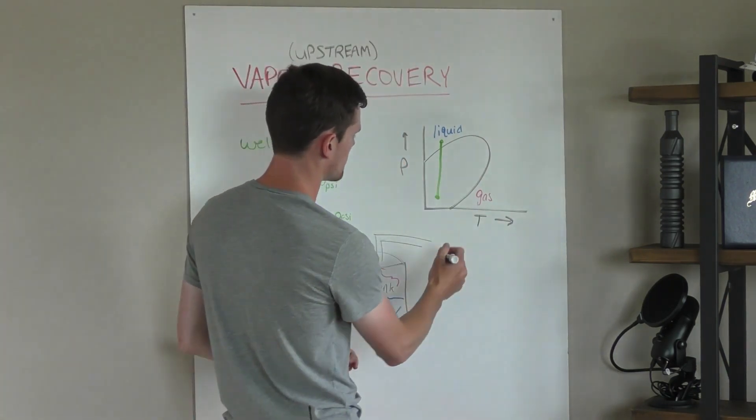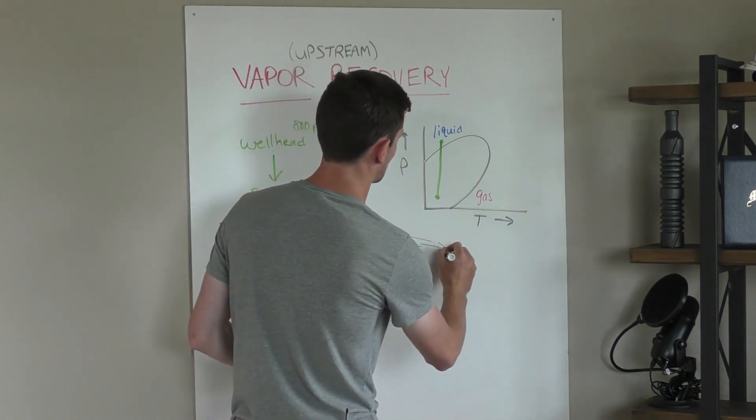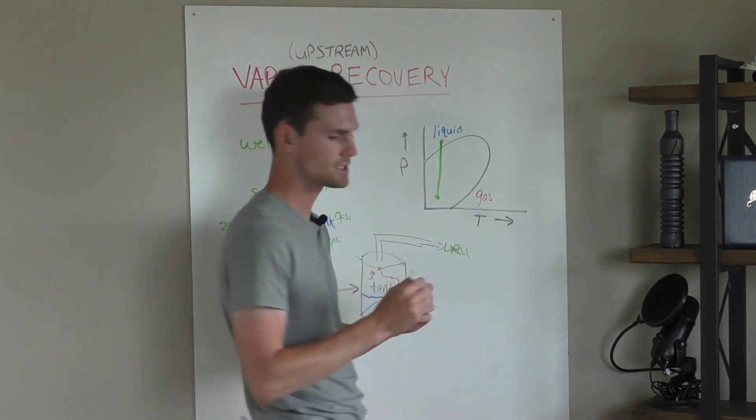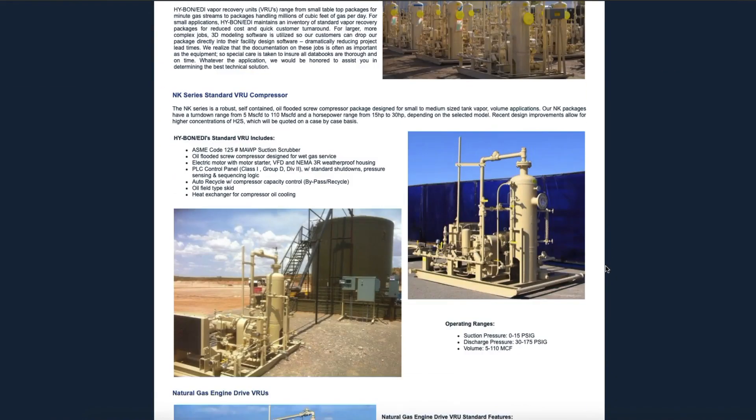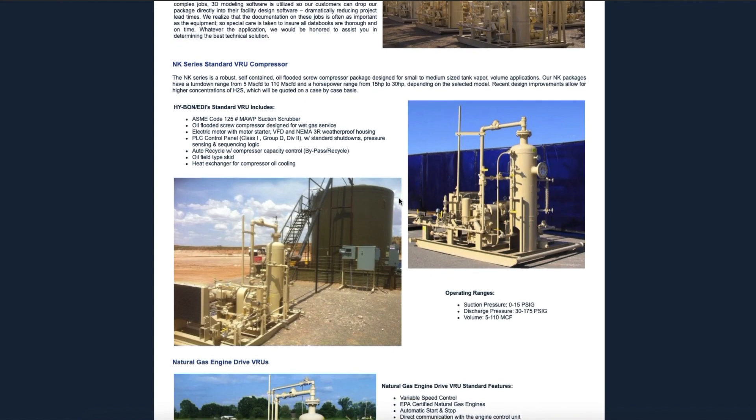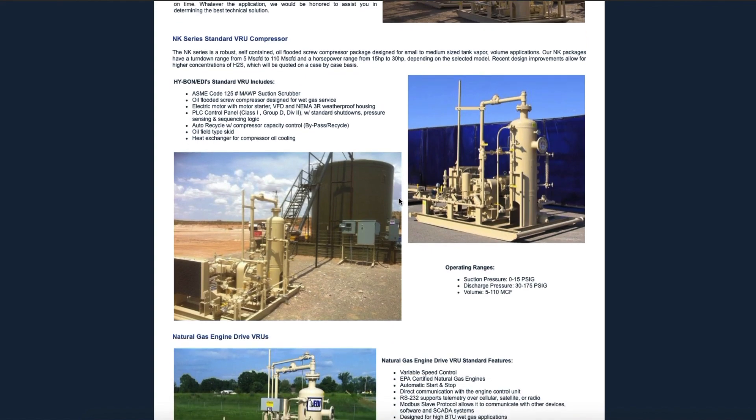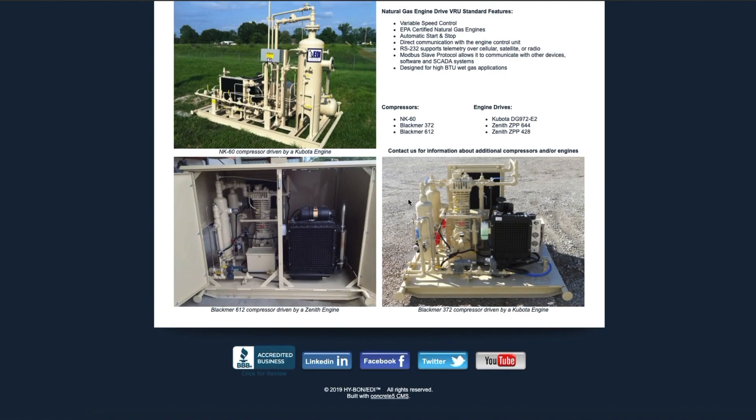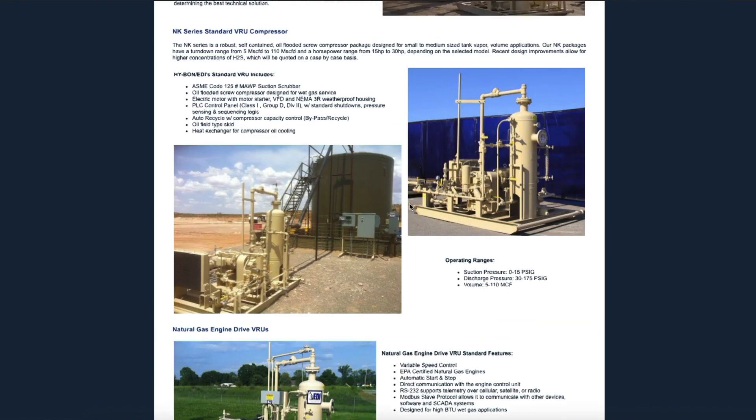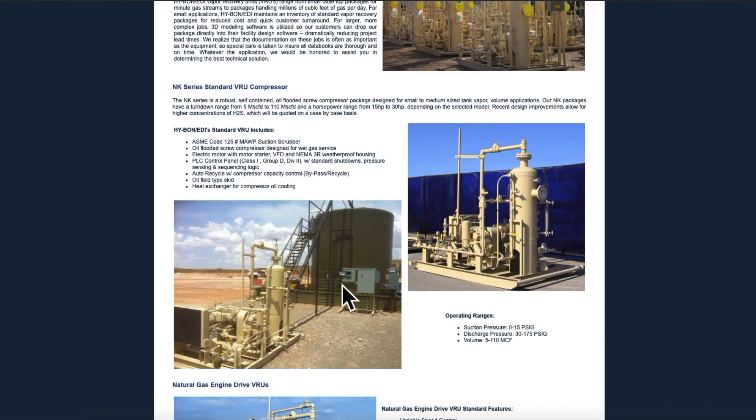So what that's going to, how that's going to work: again, it goes into that gathering line, goes into what we call a VRU, which is literally just a compressor. So that compressor is going to take this vapor gas at basically no pressure and it's going to pressure it up to the gas sales line pressure. So it's going to pressure that up. It might have to have a couple of stages. Maybe you can't do it all in one stage, it depends on the pressure difference, but it's going to send it to the gas sales.